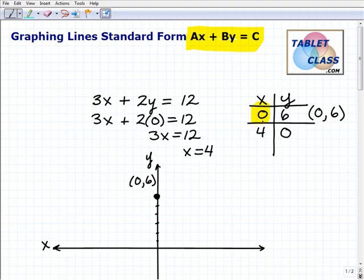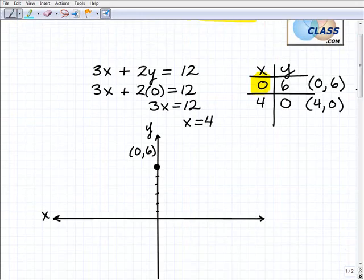So now I have 4, 0 in my table, or the point 4, comma 0. So x is 4, 1, 2, 3, 4. When y is 0, so here's the point 4, 0.